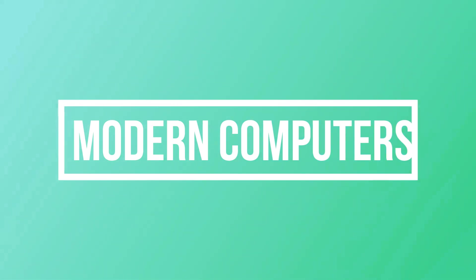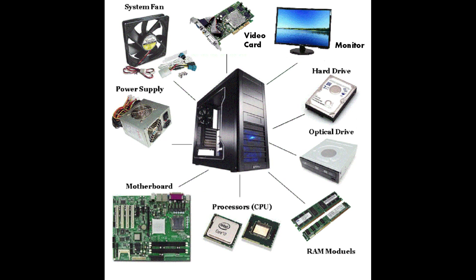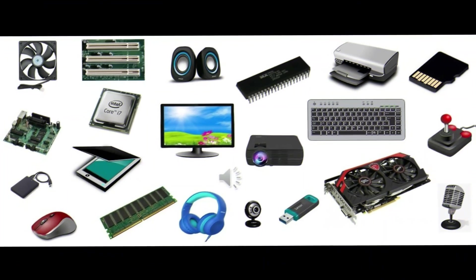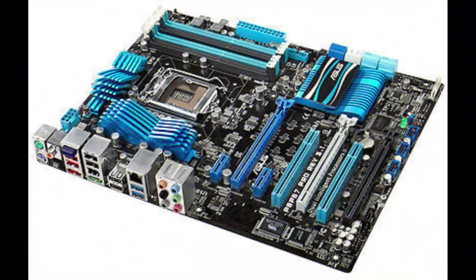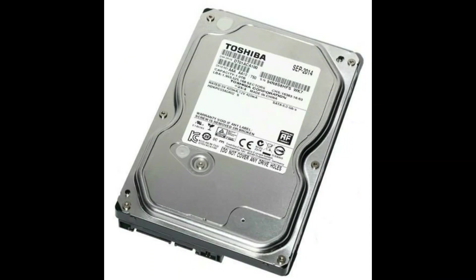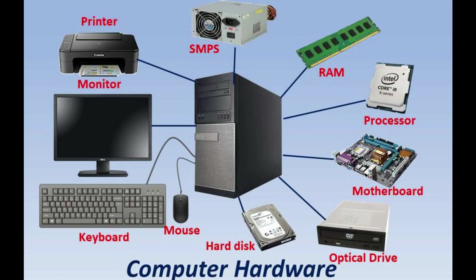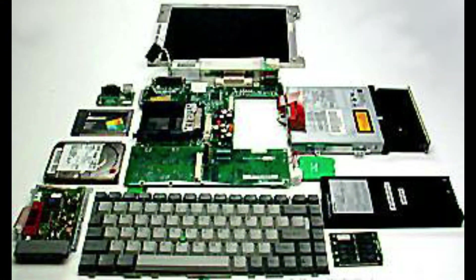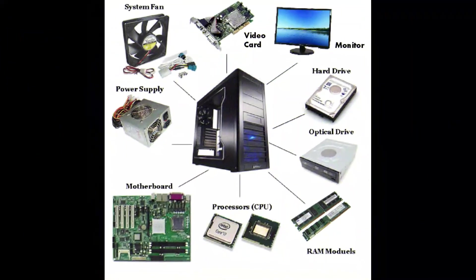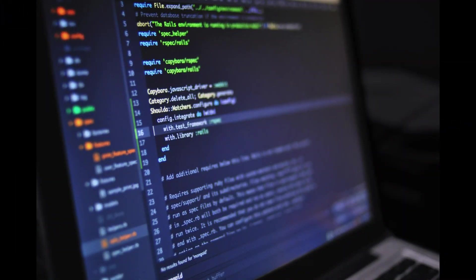Now let's talk about the simple modern computer. Computer hardware refers to the physical components that a computer system requires to function. Its hardware consists of a motherboard, CPU, RAM, power supply, and so on. Although the design of hardware differs between desktop PCs and laptops due to differences in size, the same core components are found in both.